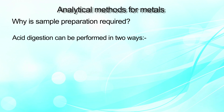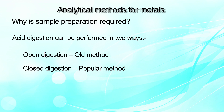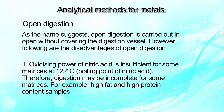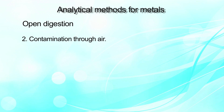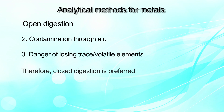Acid digestion can be performed in two ways: the conventional open digestion method, and the currently most popular closed digestion method. In open digestion, as the name suggests, it is carried out in open without covering the digestion vessel. However, it has disadvantages — the oxidizing power of nitric acid is insufficient for some matrices at 122°C, which is the boiling point of nitric acid, and therefore digestion may be incomplete for some matrices, especially those high in fat or protein. There is also the possibility of contamination through air and danger of losing some volatile elements. Therefore, closed digestion is preferred.